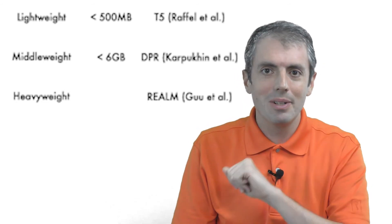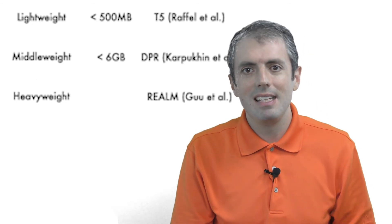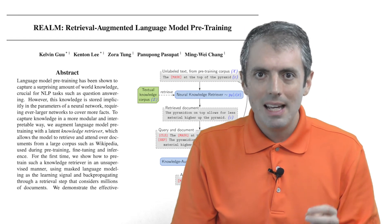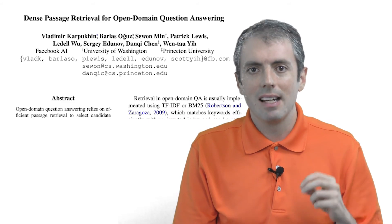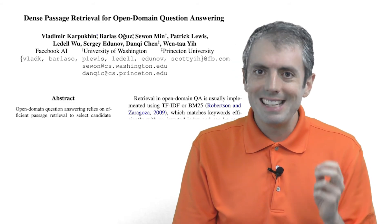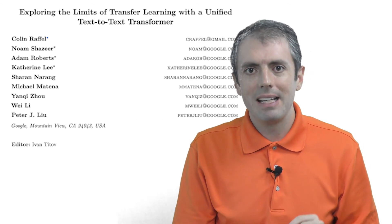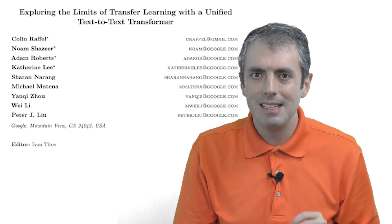But let's meet our computer teams. The heavyweight team is Realm, the middleweight team is a 6GB subset of DPR, and the lightweight team is a 500MB distilled version of T5.